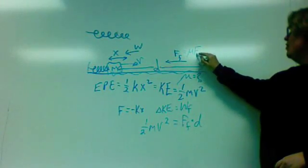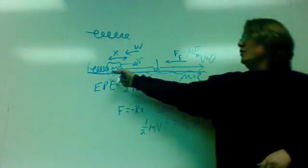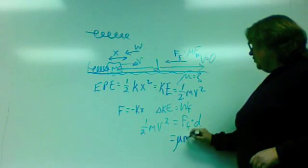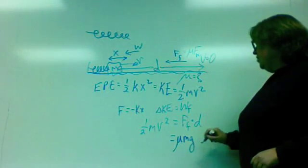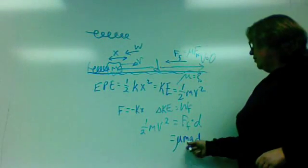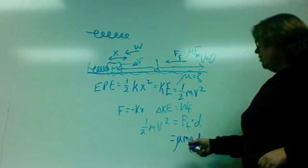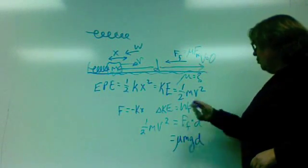What's the normal force? Well, fortunately, this is a nice horizontal table, floor, what have you. So we just have mu mg for the normal force, mu mg for the frictional force, mu mgd for the work done by friction.